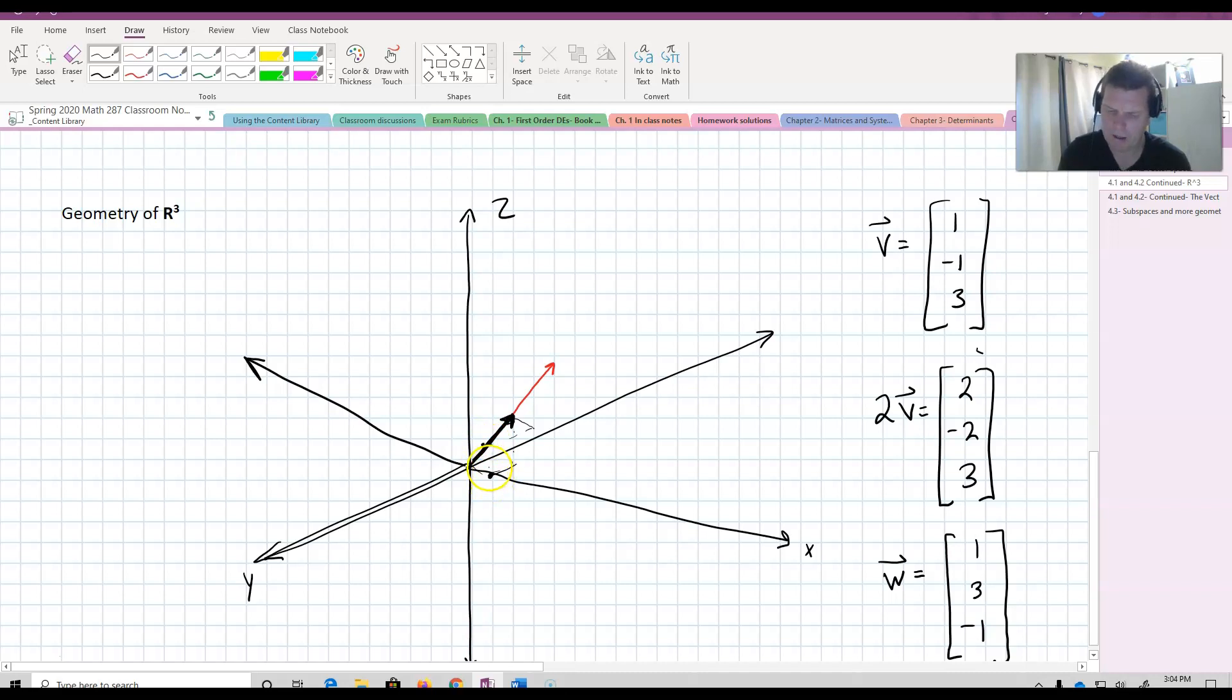And then negative 1 in the Z direction. So, it's going to take me down probably right about there. Kind of hard to see and very hard to do. Luckily, you're not going to do a lot of adding of vectors geometrically.